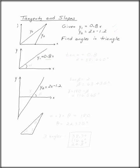We can use tangents and slopes to find angles. So here we're given two lines, y1 and y2. y1 is 0.8x and y2 is 2x minus 1.2. We need to find the angles in this triangle.